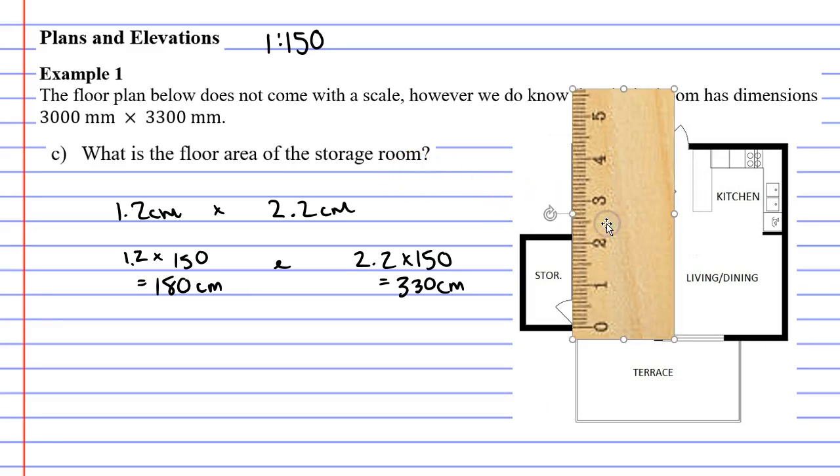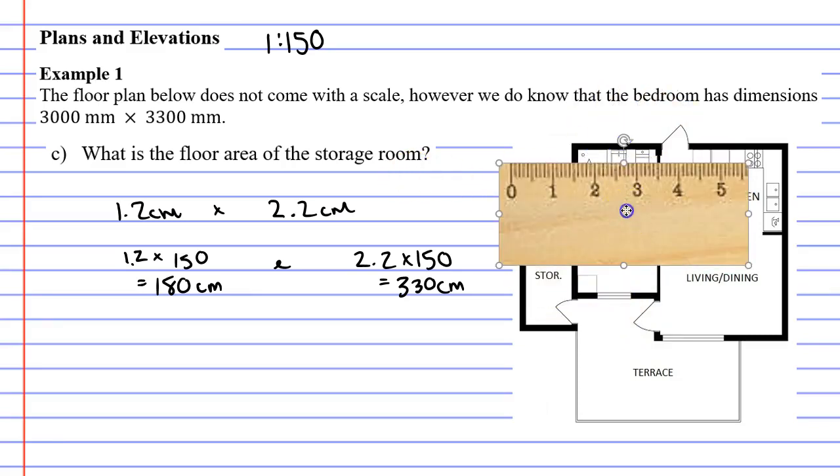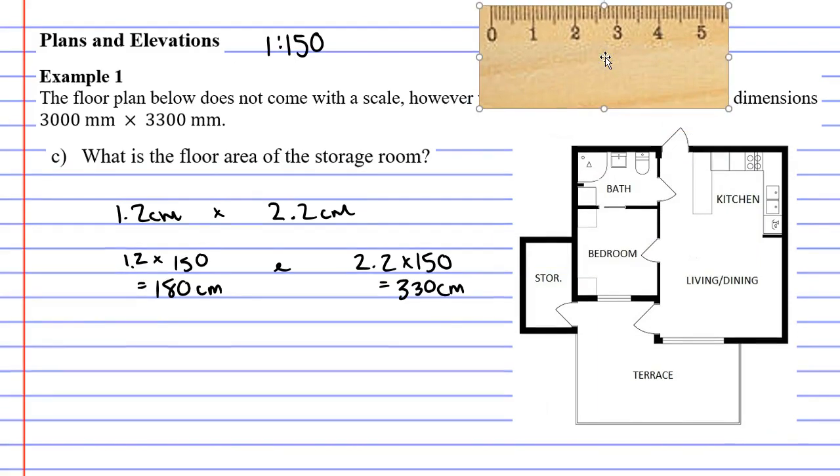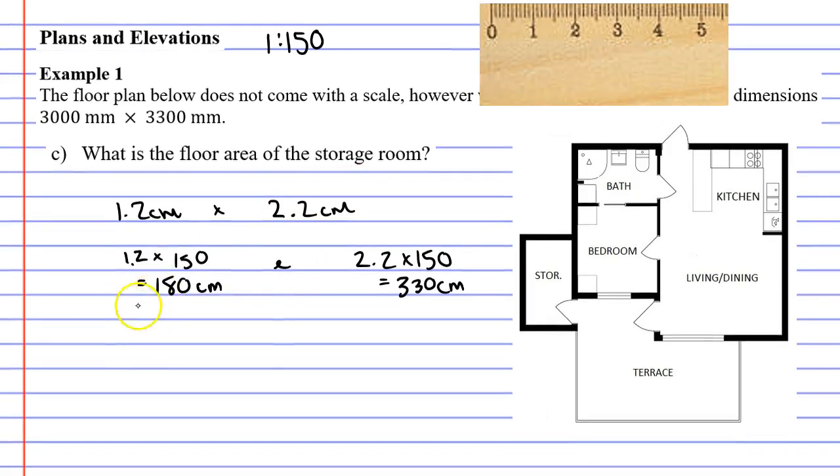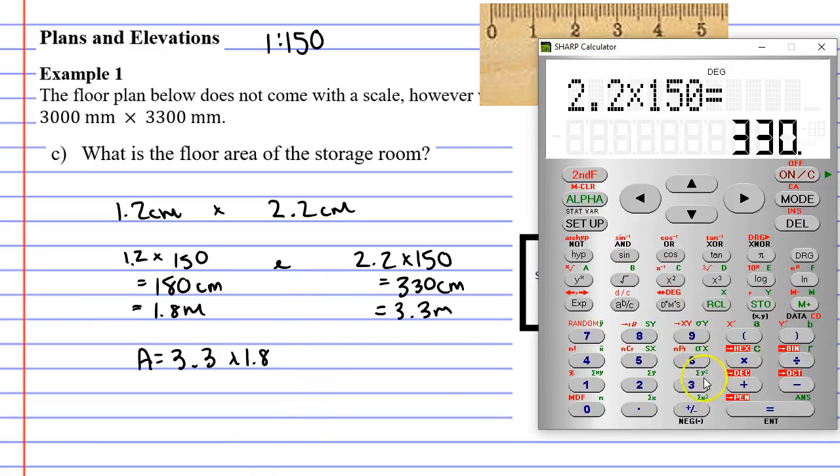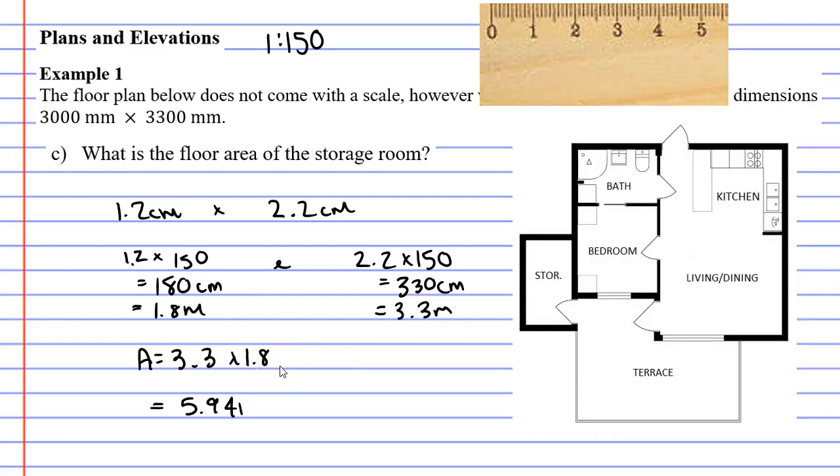Because we're finding the area of the storage room I'm going to put it in meters, because usually when you do area you do it in meters. It didn't tell you what units to put it in but I'm going to pick meters. 180 centimeters is 1.8 meters and 330 centimeters is 3.3 meters. To find the area we multiply these together: 3.3 times 1.8 equals 5.94 meters squared.